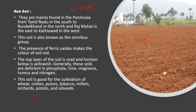This soil is found in heavy rainfall areas. Crops grown include wheat, cotton, pulses, tobacco, millets, orchids, potatoes, and oil seeds. Found in Tamil Nadu, Bundelkhand Plateau in the north, Rajmahal Hills in the east, and Kathiawar in the west. The top layer is red; the lower layers are yellowish. It is deficient in phosphate, lime, magnesium, humus, and nitrogen. Humus is directly proportional to soil fertility.